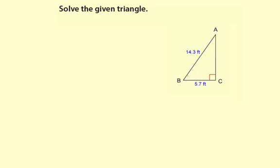Well, in this case, I'm just going to focus on using trigonometric ratios. First thing I'm going to do is solve for this angle B right here. We are given the side adjacent to angle B and the hypotenuse. When you have adjacent and hypotenuse, that's cosine. So I'm going to say cosine of B equals 5.7 divided by 14.3, that ratio.